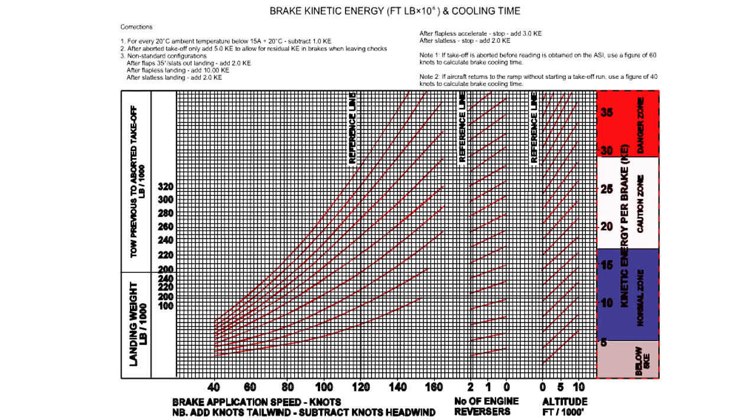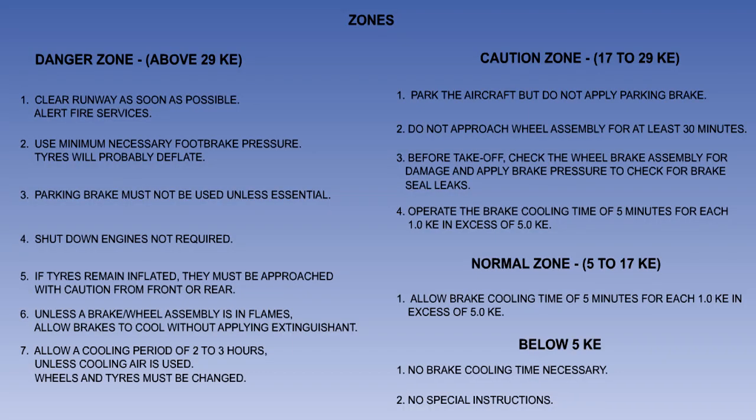The graph will then indicate the amount of kinetic energy absorbed in millions of foot-pounds. This figure is not of much interest to pilots. However, the graph output is also split into three zones: the normal, caution and danger zones. It is these zones and the actions and precautions associated with them that the pilot is interested in. The actions and precautions for the three zones are listed here. You can take a moment to read them, but bear in mind that they will vary from aircraft type to aircraft type.